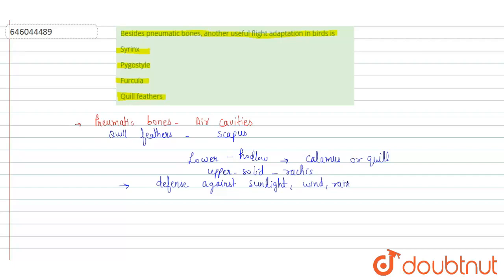From here we can conclude that our answer is the quill feather. If we consider the rest of the options, the first option is syrinx, and syrinx is the vocal organ of the birds.